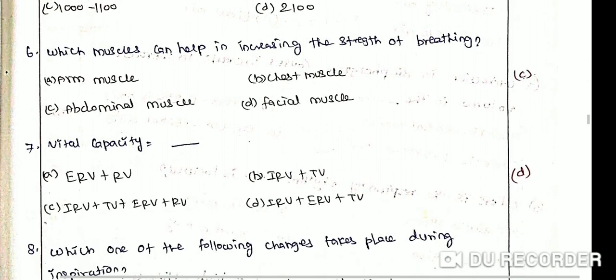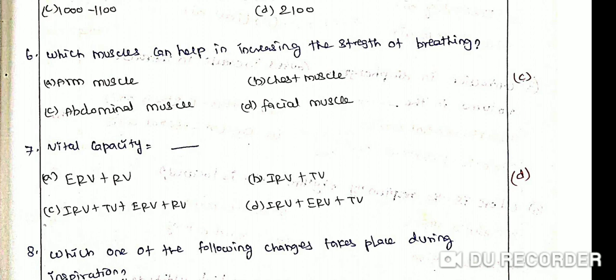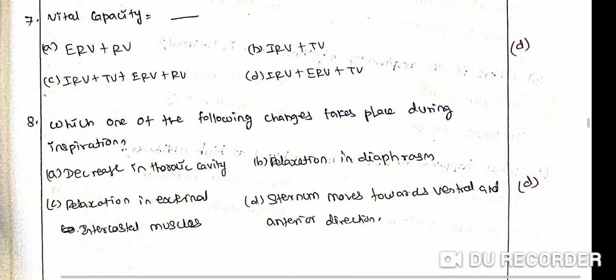Vital capacity consists of: Option A: Expiratory reserve volume plus residual volume. Option B: Inspiratory reserve volume plus tidal volume. Option C: Expiratory reserve volume plus tidal volume plus residual volume. Option D: Inspiratory reserve volume plus expiratory reserve volume plus tidal volume. The correct answer is Option D: Inspiratory reserve volume plus expiratory reserve volume plus tidal volume. Vital capacity is the amount of air that can be expired by the most forceful expiration after the deepest inspiration.